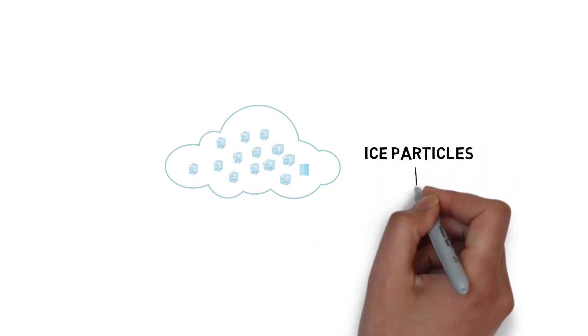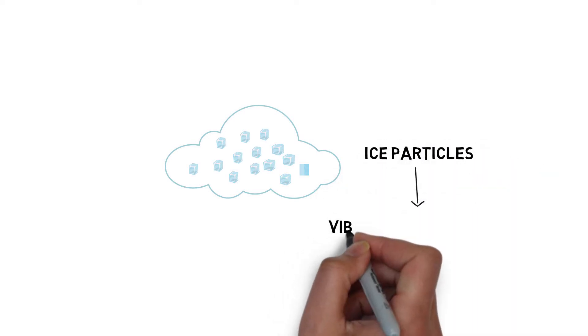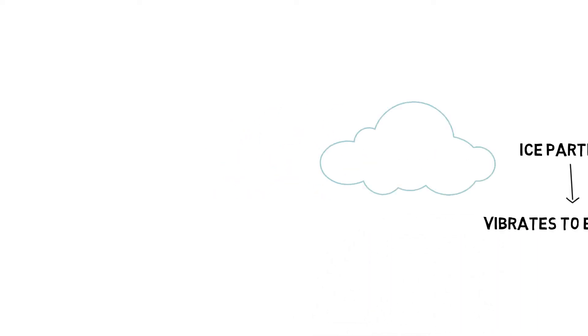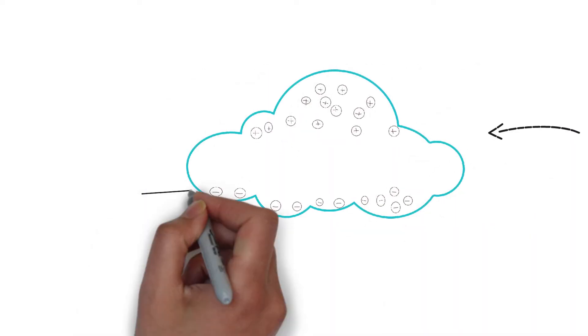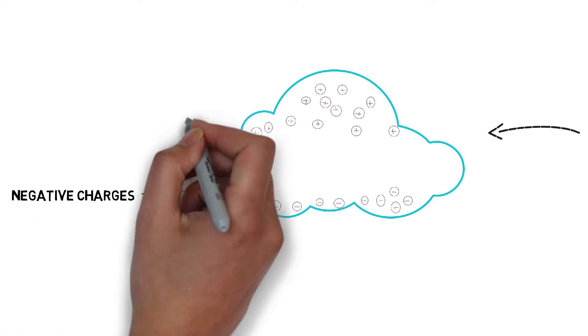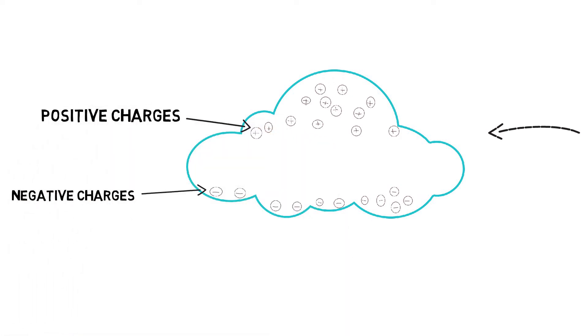These ice particles in the cloud rub against each other, creating positive and negative charges. Negative charges form at the lower side of the cloud, and positive charges form at the upper parts of the cloud.